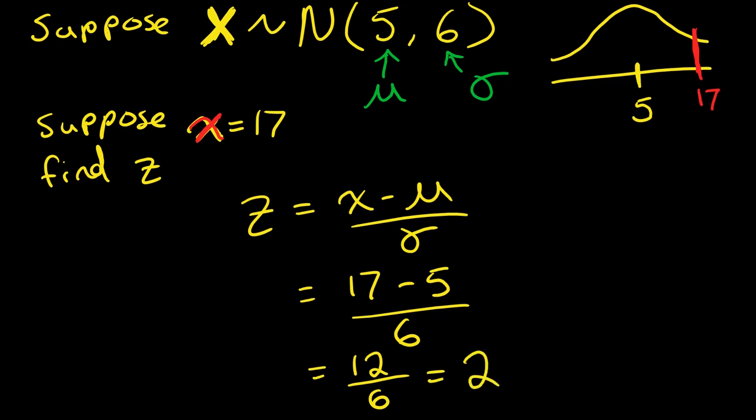So what does that mean? What is z? What that's saying is that 17 is two standard deviations above the mean. This means that 17 is two standard deviations - SD to denote standard deviations - above, or you could say to the right of the mean.